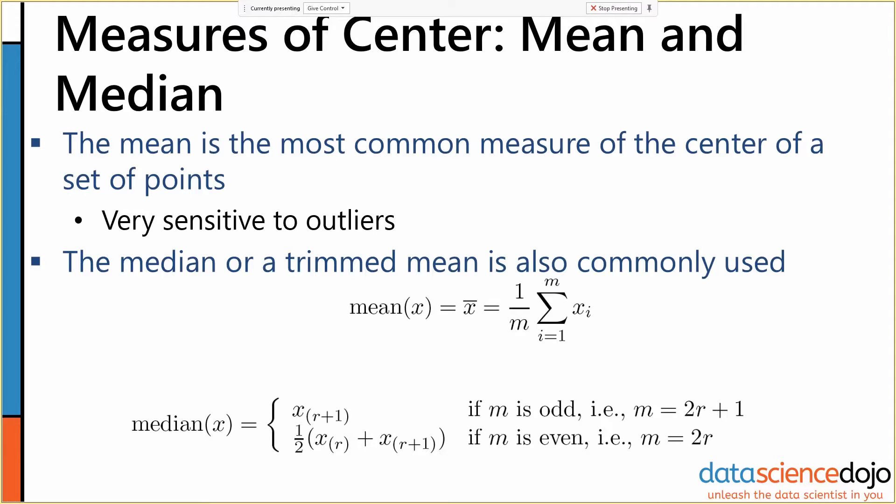Means are easy to calculate but very sensitive to outliers. Means also can give you a real sense of the skew. If you have skewed data, means can give you a sense of the skew of your data very nicely.